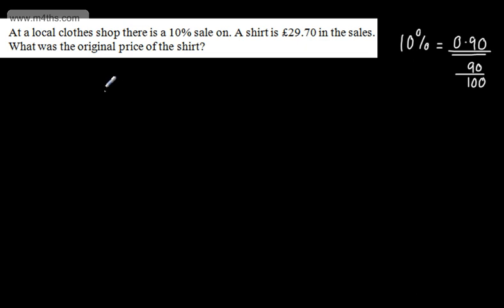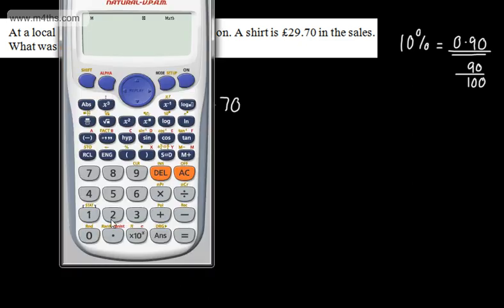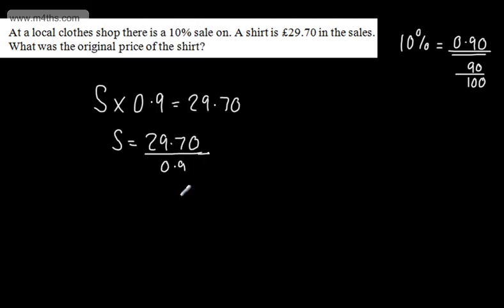So what I'm going to say is the shirt, the original price of the shirt, which I'll call S, multiplied by 0.9, gave us the value of £29.70. So if I want to find the value, all I'm going to do is say that the shirt, S, is £29.70 divided by 0.9. That will give me now the original price. Straight through a calculator, so £29.70 divided by 0.9, that gives me £33. So the original price is going to be £33.